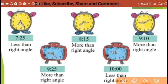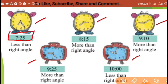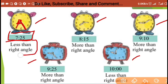We have the answers for the first, second, third, fourth, and fifth watches. For the first watch, the time is 7:25 — it may be AM or PM. This is the hour hand and this is the minute hand. The angle is less than a right angle. You know a right angle looks like an L, so here the angle is less than a right angle.